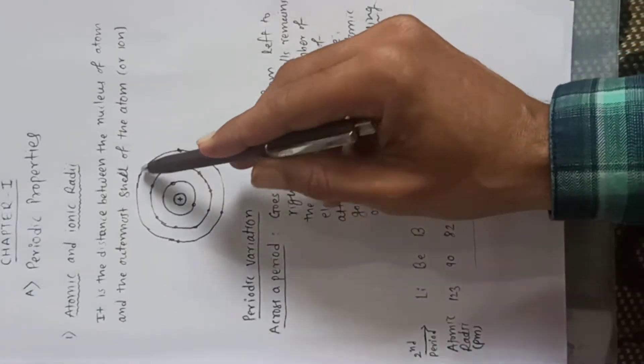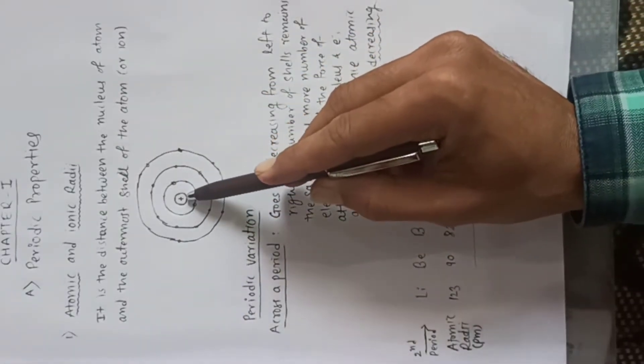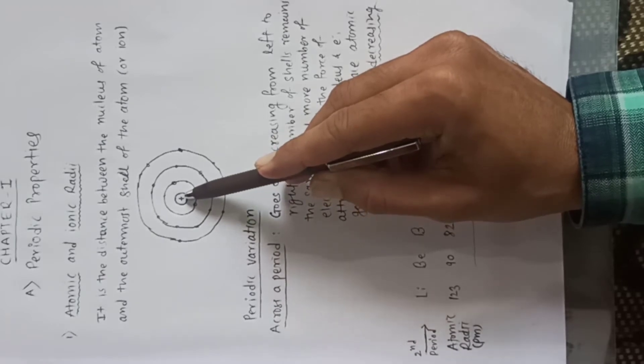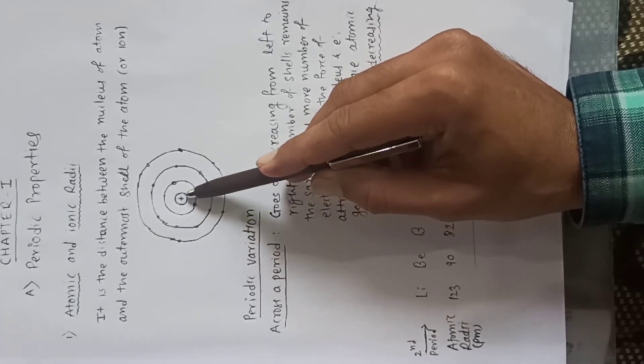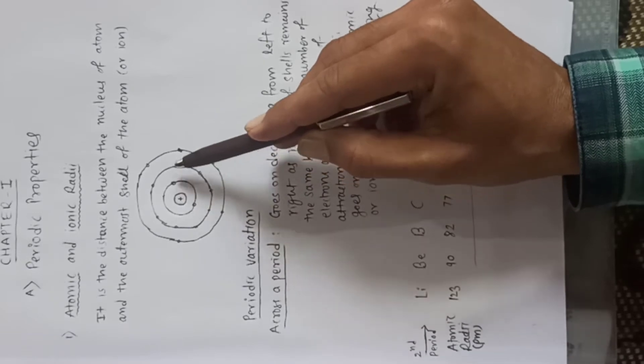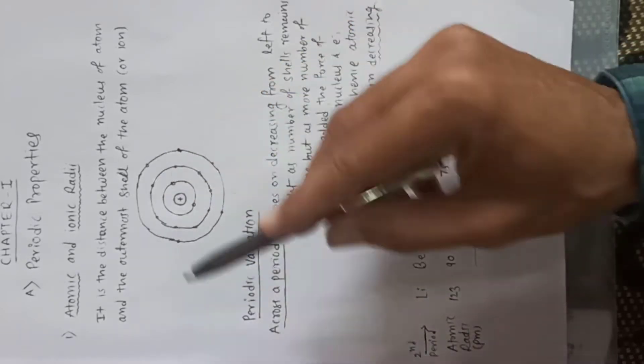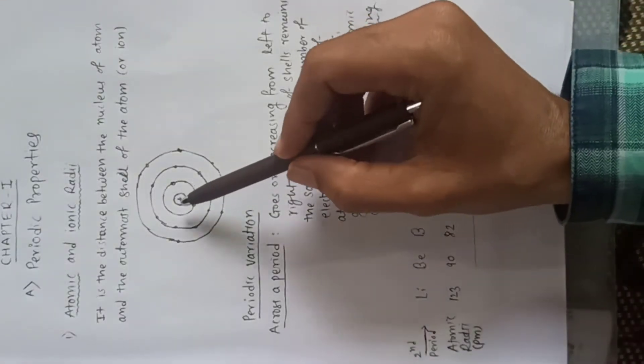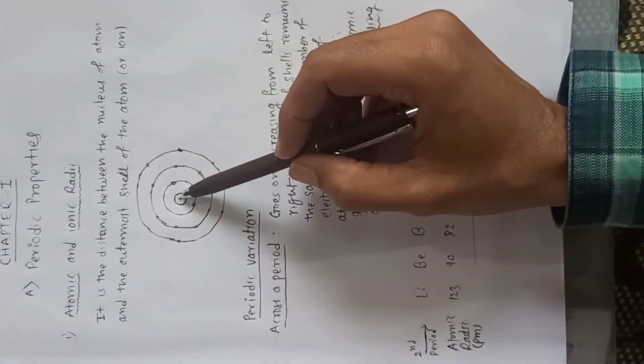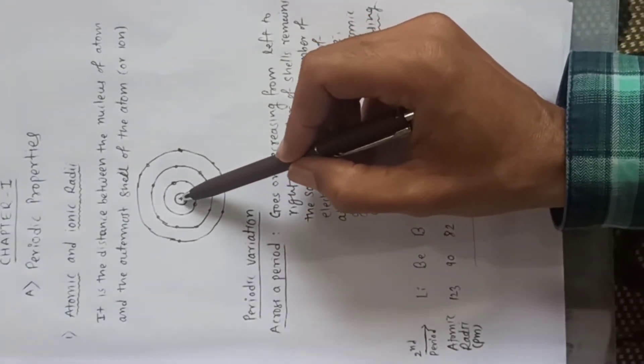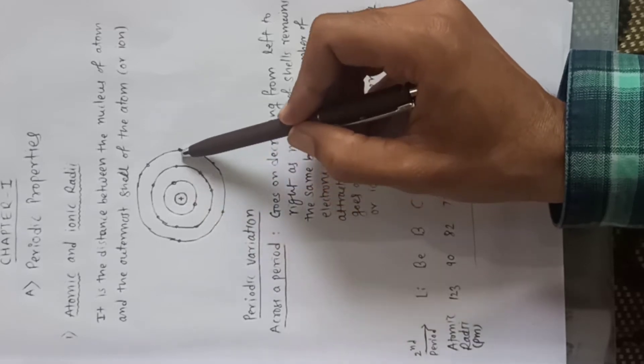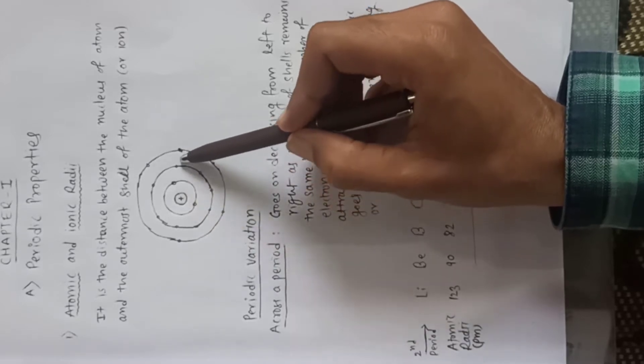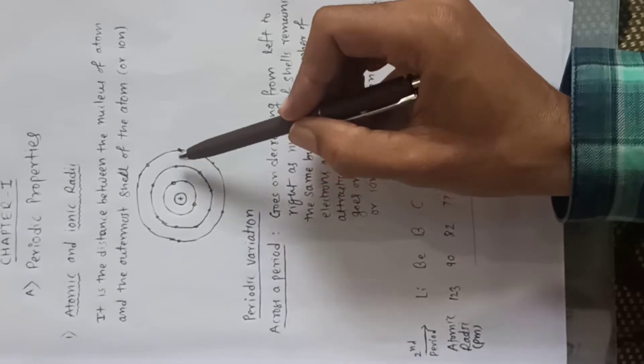We know this is the structure of the atom. The nucleus is at the center where the positive charge is concentrated, and electrons revolve around the nucleus in orbits. Atomic or ionic radius is nothing but the distance between the center of the nucleus and the outermost shell. This distance is called the atomic radius.